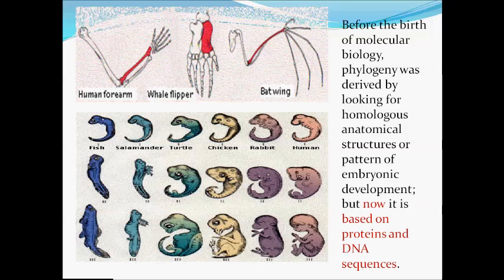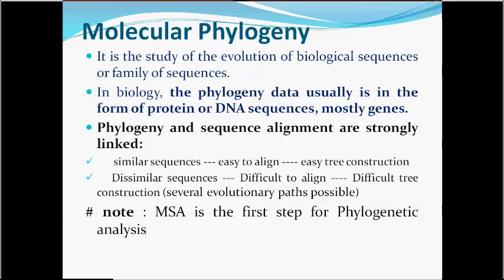Body parts are considered homologous if they have the same basic structure, the same relationship to other body parts, and develop in a similar manner in the embryo. Here we can see these embryos share the same basic structural plan in their early days. Next is the concept of molecular phylogeny.